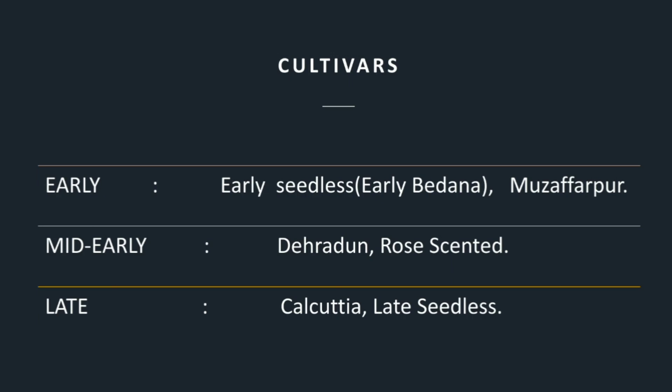Cultivars: There are three categories — early, mid-early, and late. In the early category, early seedless (also known as early bedana or Muzaffirpur) are included. In mid-early cultivars, Dehradun and rose-scented are included. In the late category, Calcutta and late seedless are included.